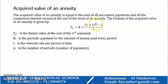Exponent n, which is the number of payments or the number of periods, minus 1 over i. So Fn is the future value at the end of the payment. R is the periodic payment or the amount of money paid every period. i is the interest rate per period of time, and n is the number of periods or number of payments.